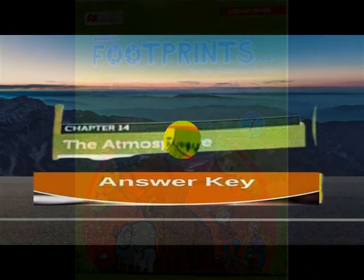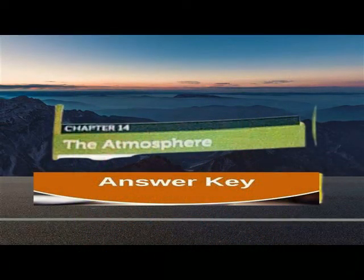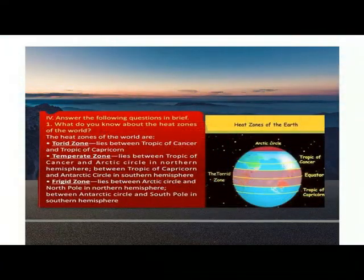On the basis of the amount of heat received, the earth has been divided into three heat zones: torrid zone, temperate zone, and frigid zone.